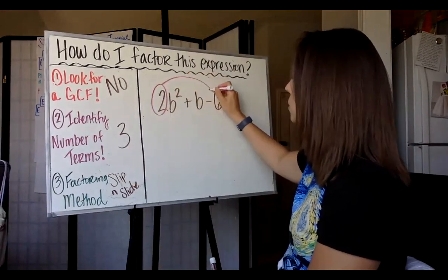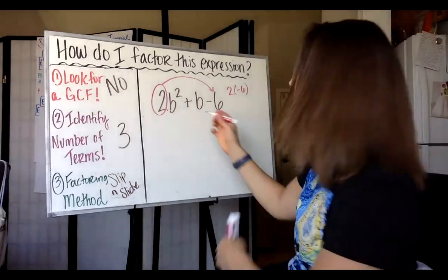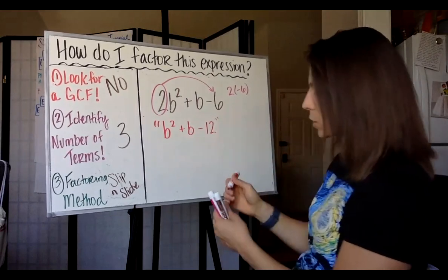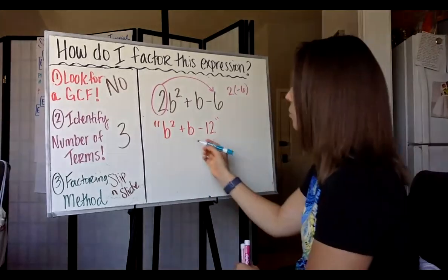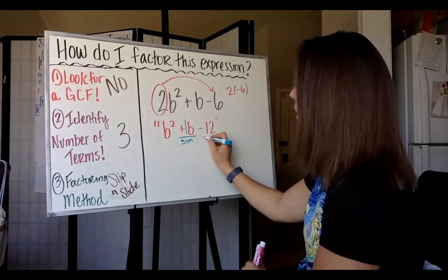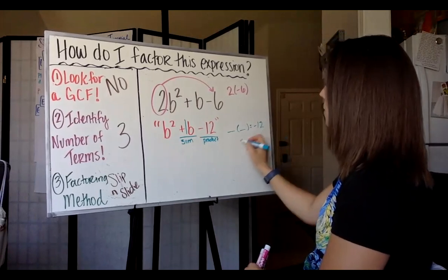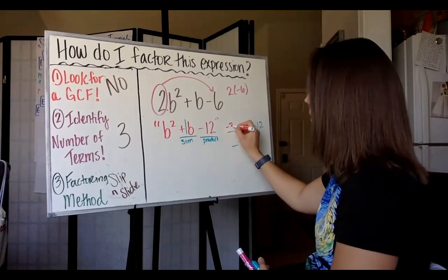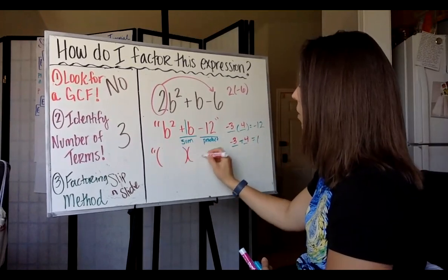Step 1 of slip and slide: flip the 2 down to the end by multiplying 2 times negative 6. Our trinomial in the alternate universe becomes B squared plus B minus 12. Now with a leading coefficient of 1, we can use P's and Q's: what two numbers have a sum of 1 and a product of negative 12? The numbers are negative 3 and 4. Let's double check — yes, that looks good.